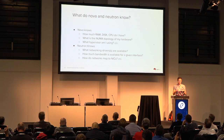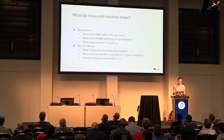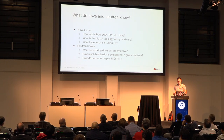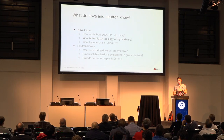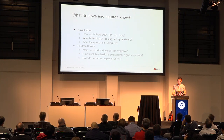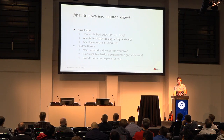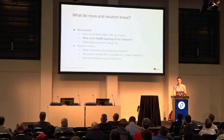Nova knows things about compute resources — what kind of basic resources you have available, whether you're using libvirt or QEMU — and it also knows things like NUMA topology, because it has introspection through the libvirt API or the Xen API, and so forth. Neutron doesn't know any of this stuff. And just as we don't want Nova to start learning how to inspect OVS, we don't want to have to teach Neutron how to inspect libvirt, Xen, Hyper-V, or whatever your chosen hypervisor is.